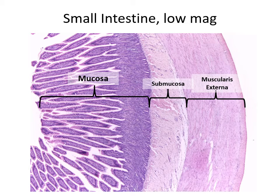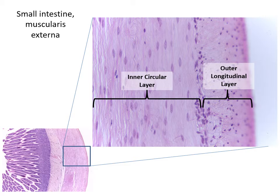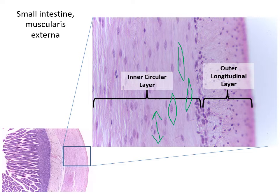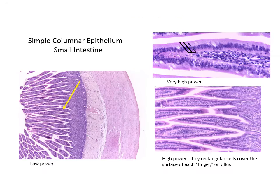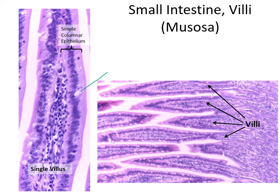Here's another image from our lab — again you can see the mucosa with these finger-like projections called villi, submucosa, and the muscularis externa. If we zoom in for a close-up of the muscularis externa, we see the inner circular layer — here's an individual smooth muscle cell, here's another one oriented in that direction — and then the outer longitudinal layer where they're actually coming out toward us. Here's another example with a close-up on a villus where you can see the individual simple columnar epithelial cells and the goblet cells.